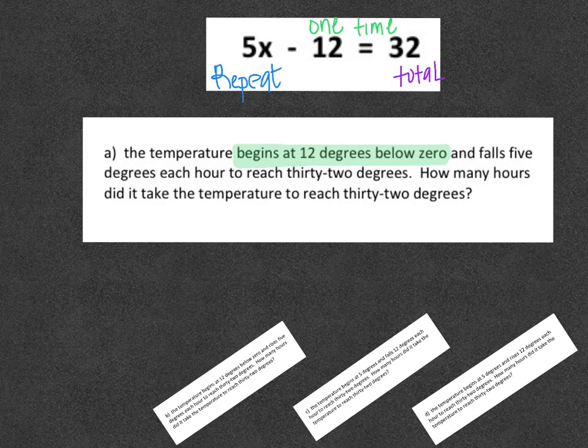That's going to be in the place of letter B for our format. Then as I keep reading, the next thing says and falls 5 degrees each hour. That definitely means it's going to be repeating. And I know this because of this clue word each right here. And then the word falls means it's going to be negative because it's going down. So 5 is going to be in the place of letter M.